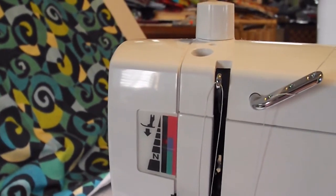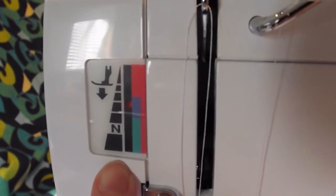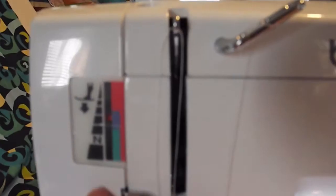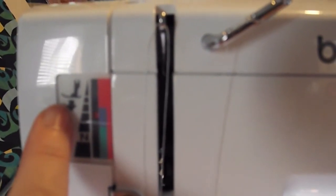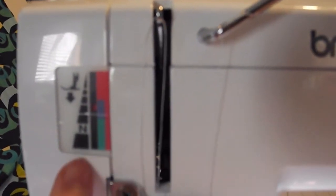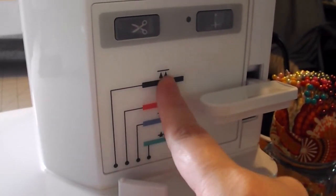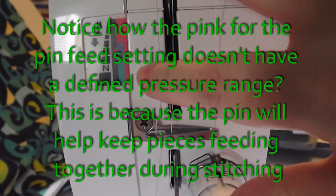And then the final dial to adjust is this dial right here. This is for the presser foot pressure. And you can see the little icon for the foot. So if you notice, there's colors here. Okay. And then remember, we had colors over here on the feed dog. These colors are suggestive of what these colors are going to be.